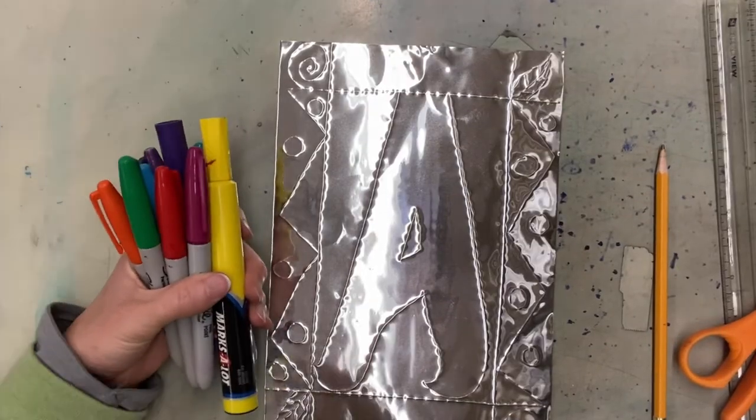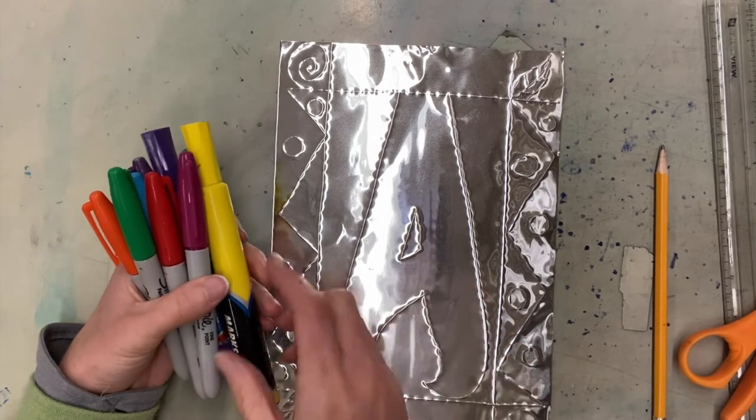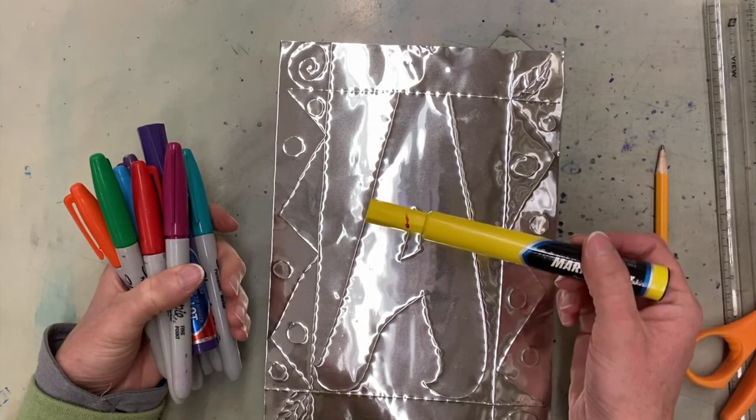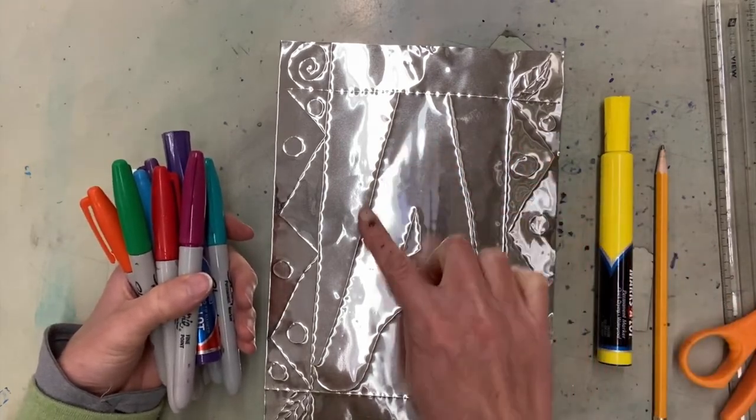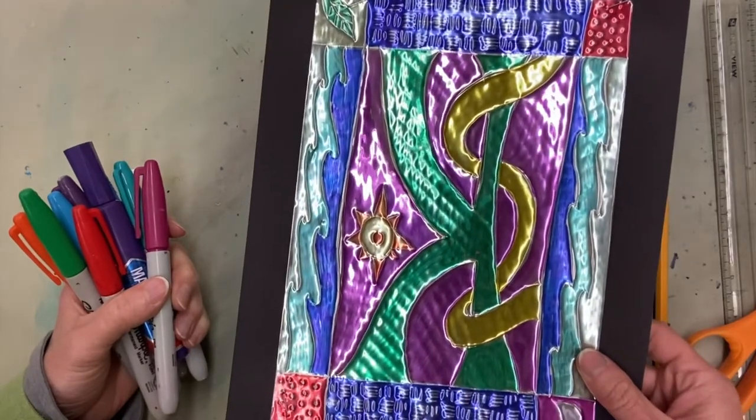So second to last step, now what I'm going to do is take sharpies and I'm going to color my letter. Now I'm not going to color over though where the lines are raised. I like those silver lines because they help define my shapes and make my shapes look separate in my design.